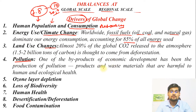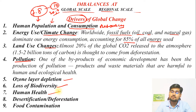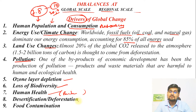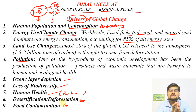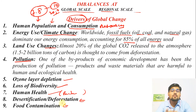Pollution is the by-product of all economic and developmental activities — waste materials hampering health and living conditions worldwide. Then come ozone layer depletion, loss of biodiversity, human health problems, deforestation, and food contamination causing nutrition and food security problems. These are major drivers at the global level, all concerned with anthropogenic activities or human influences, and we need ecosystem management to restore balance.